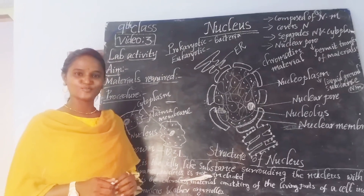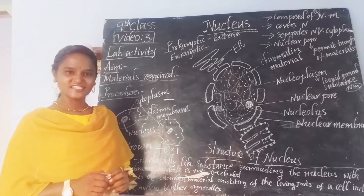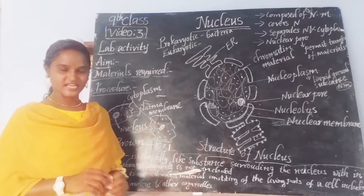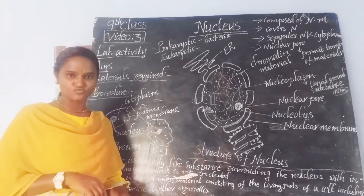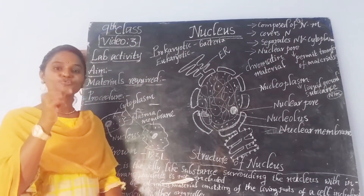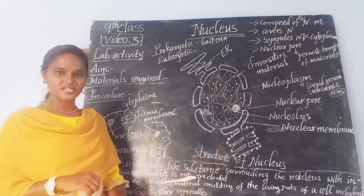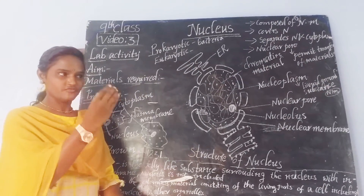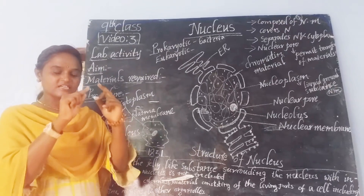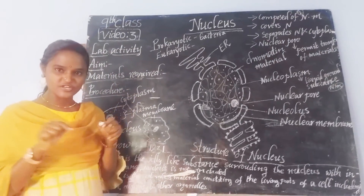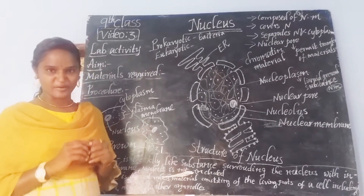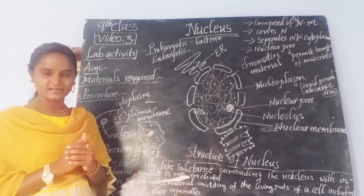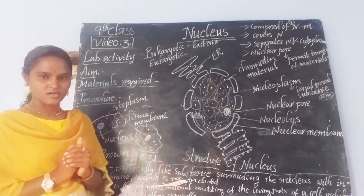Welcome students, good morning everyone. Today we are going to discuss a new topic. In the previous class, we discussed the boundaries of the cell. What are the boundaries of the cell? If you take an animal cell, the boundary is the cell membrane. What is the boundary of a plant cell? It is the cell wall.